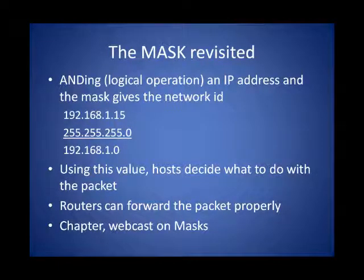ANDing is a logical or mathematical operation where you take an IP address and AND it with a network mask. This will tell you either the network you're residing on or the destination network, and this is what we use to figure out how to forward packets. Both hosts and routers use these operations, and using this value we look up in the routing table to determine which interface to use to forward the packet. This is a fairly complex idea — there's an entire chapter on this in the book and a webcast out on O'Reilly to help you through this topic.